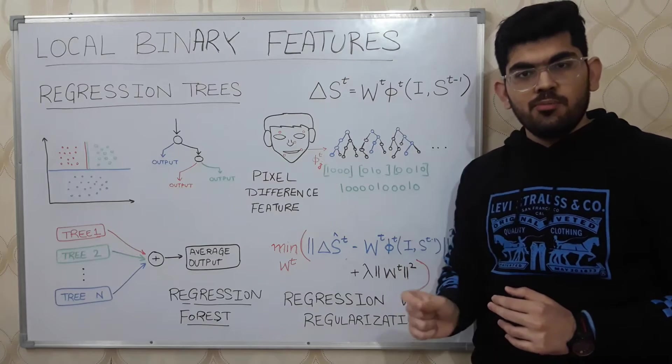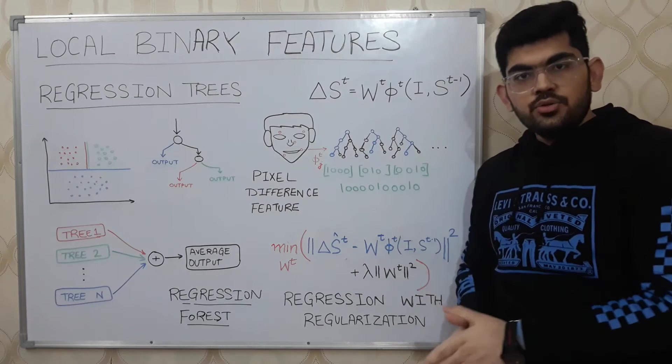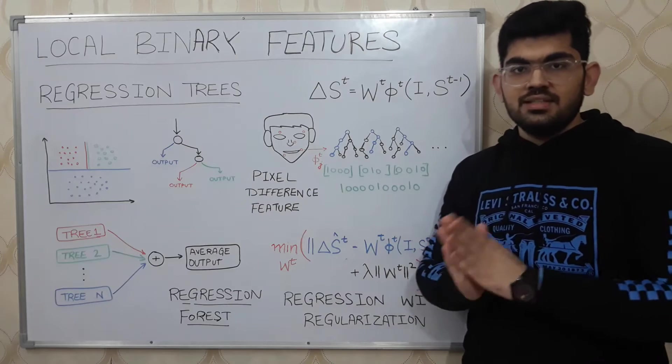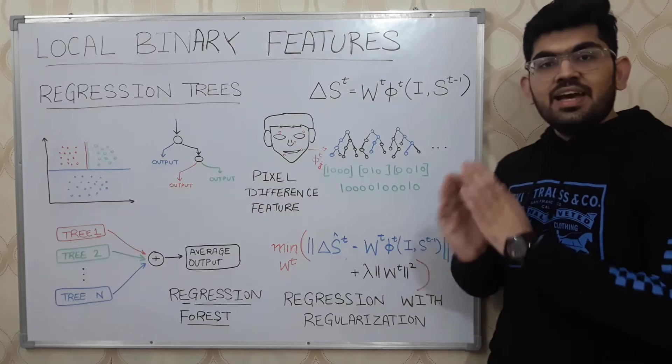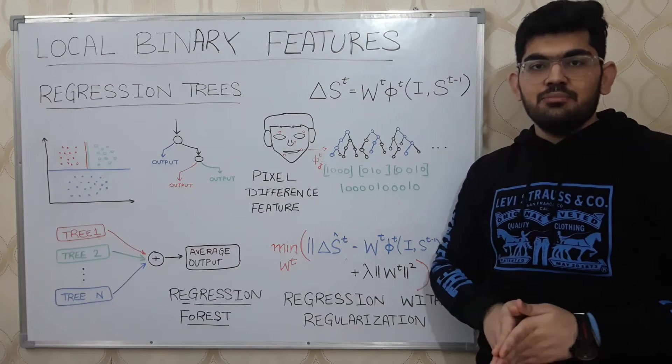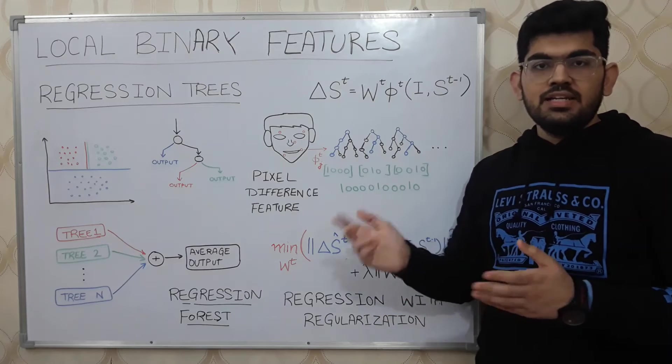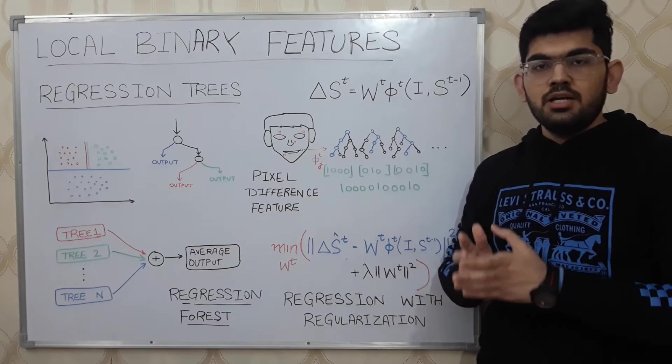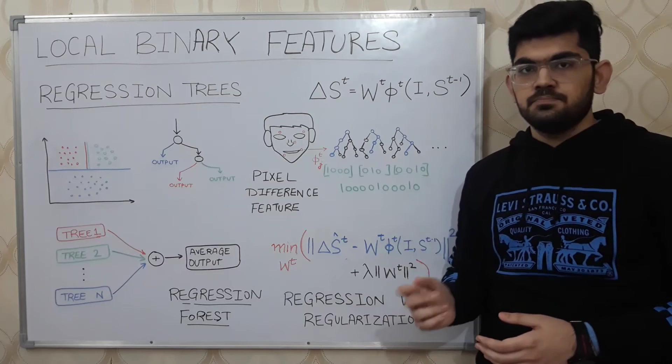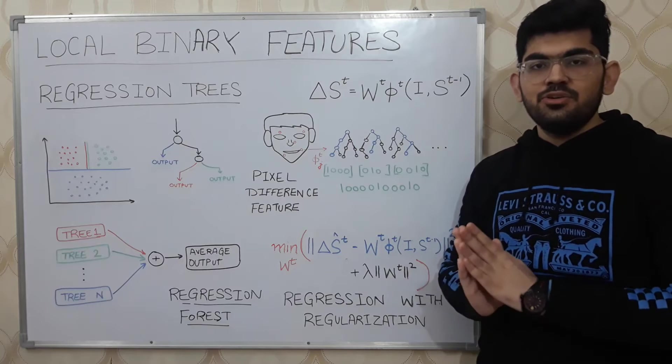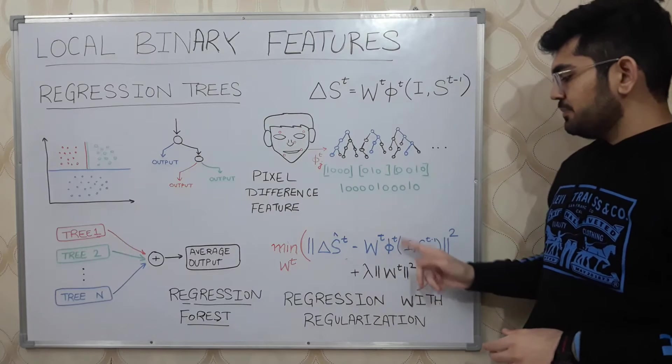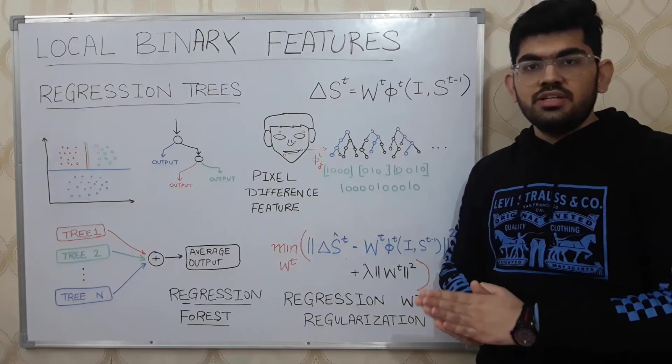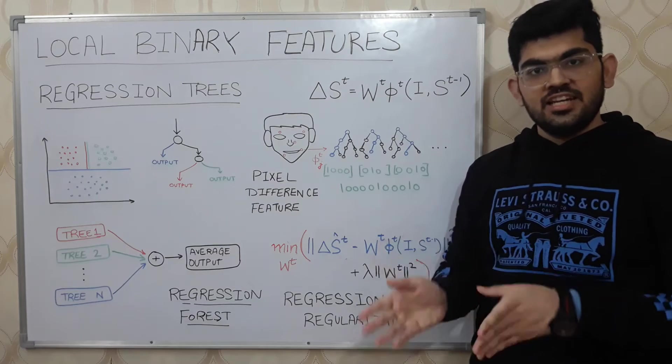But there seems to be one particular problem with minimizing this term. Due to this particular formulation, it has been seen that this regression approach over fits the data. What that means is that Wt has a tendency to learn the facial landmarks of only some particular faces in the complete training set. It would only learn the landmarks of some certain faces and would not be able to generalize on a number of different faces. In order to reduce and penalize this behavior of Wt, we add an extra term to this expression lambda times Wt squared.